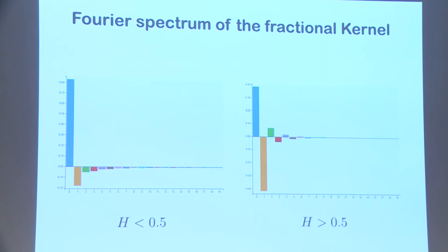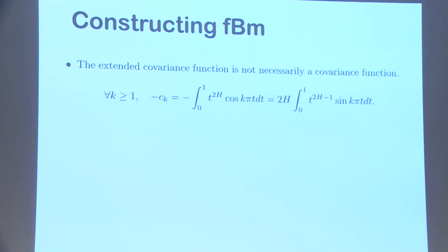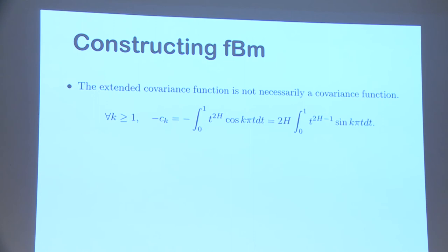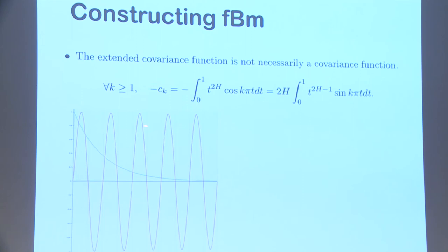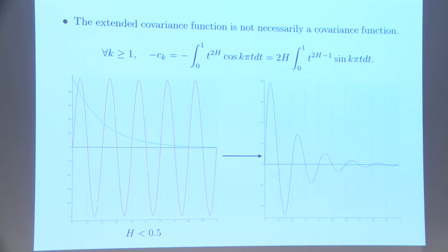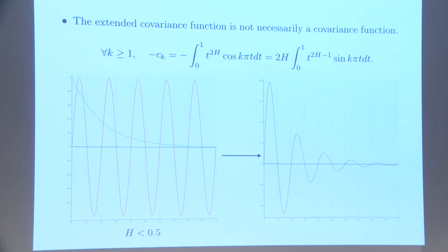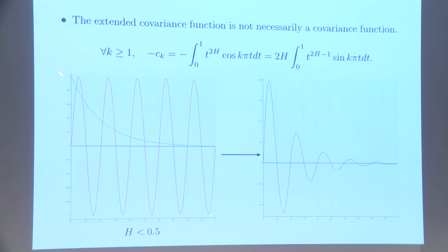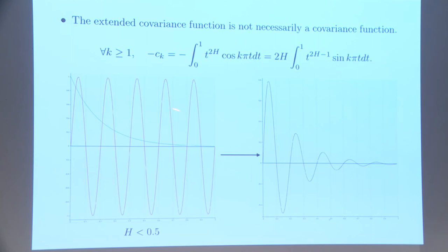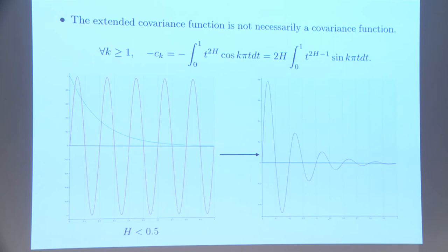For H > 0.5, the Fourier coefficients do not all have the same sign, so we need to work harder. To understand why it works for H < 0.5: write −C_k via integration by parts as the integral of t^(H−1) times a sinusoid. All partial surfaces are decreasing in amplitude so their sum is positive. There is something deep about the singularity around zero — it makes everything work. For H > 0.5, there is no singularity; the function equals zero there.